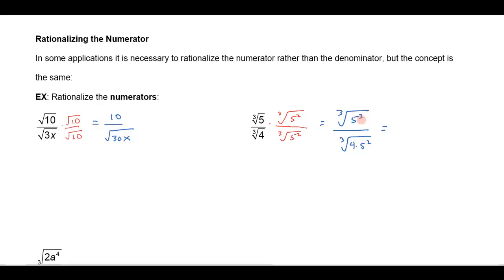So notice here you could think of 5 cubed as 125 and the cube root of 125 is 5, or just the cube root undoes a cube, I get 5 in the numerator, and in the denominator I'm going to get the cube root of 100, 4 times 25 is 100.